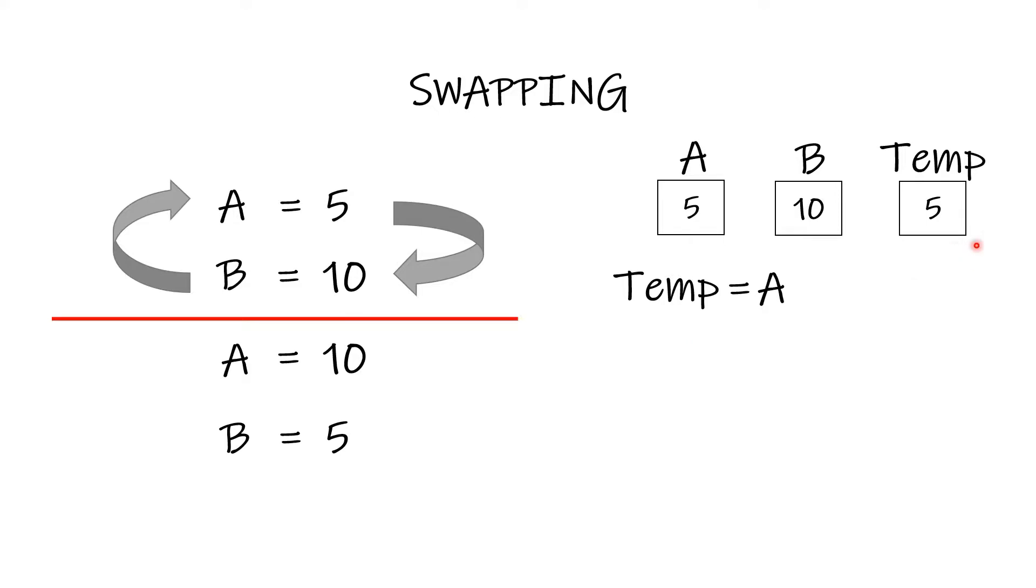Now the value of temp will be 5. Then we will put the value of B into A, which is 10. And finally, we will put the value of temp into B, which was the initial value of A. Now the value of B will become 5. Now you can see we have achieved this result. This is the most common way of swapping two variables.